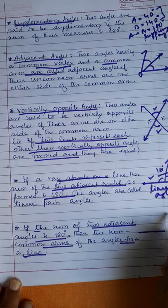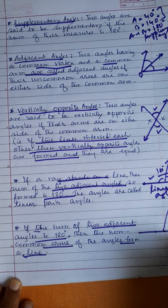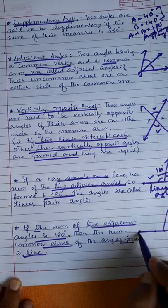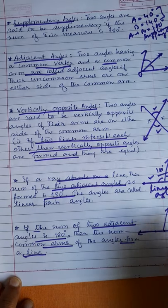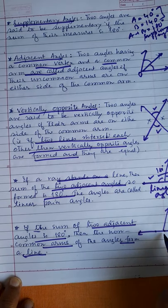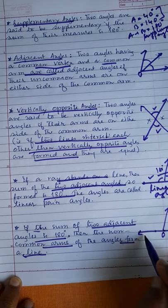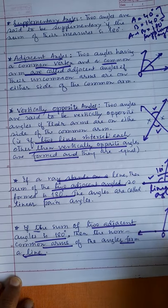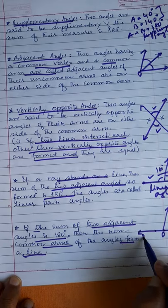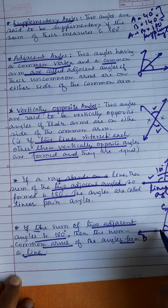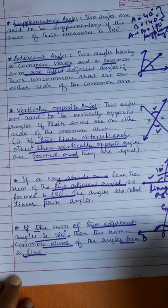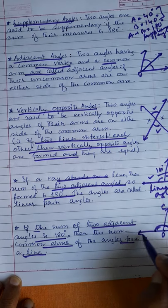This is one adjacent angle and another adjacent angle — this is the common arm and these are the non-common arms. The two adjacent angles OA and OB sum to 180 degrees. The non-common arms OA and OB form a line — that is, AB is a line.